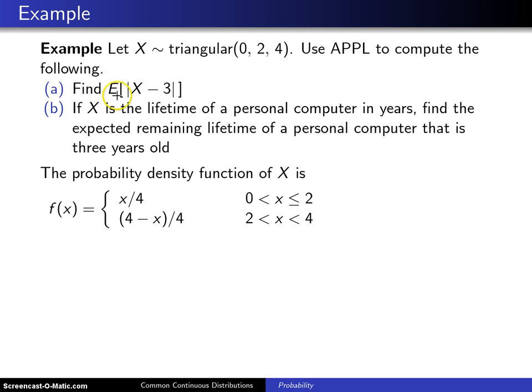The first is find the expected value of the absolute value of X minus 3. In this particular case, that will come out to be the expected value of the absolute value of the random variable X minus 3, which will be the integral from minus infinity to infinity of the absolute value of X minus 3 times f of X dx.